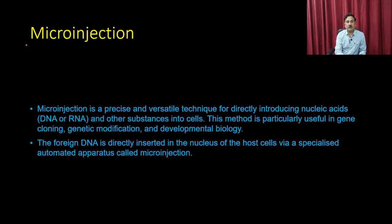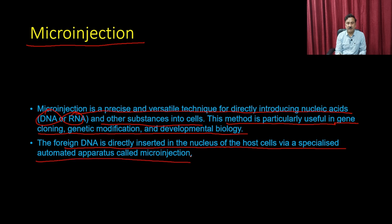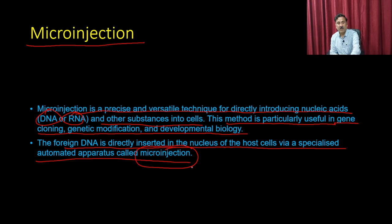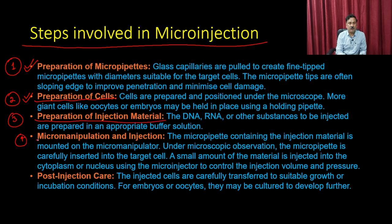The next method is microinjection — a precise technique for directly introducing nucleic acids (DNA or RNA) or other substances into a cell. It is particularly useful in gene cloning, genetic modification, and developmental biology. The foreign DNA is directly inserted into the nucleus of the host cell using a specialized automated operator. The steps include: preparation of micropipettes, preparation of cells, preparation of the injection material, micromanipulation and injection, and post-injection care.